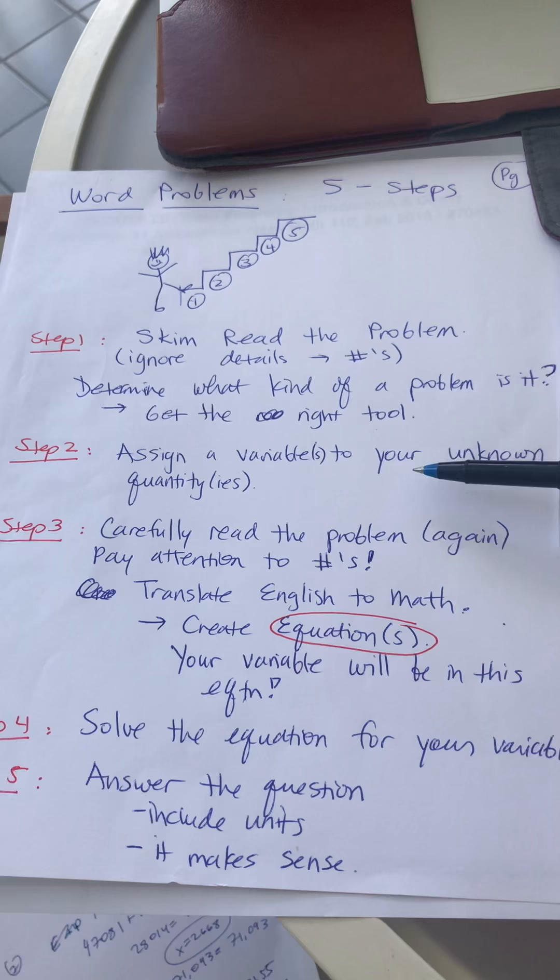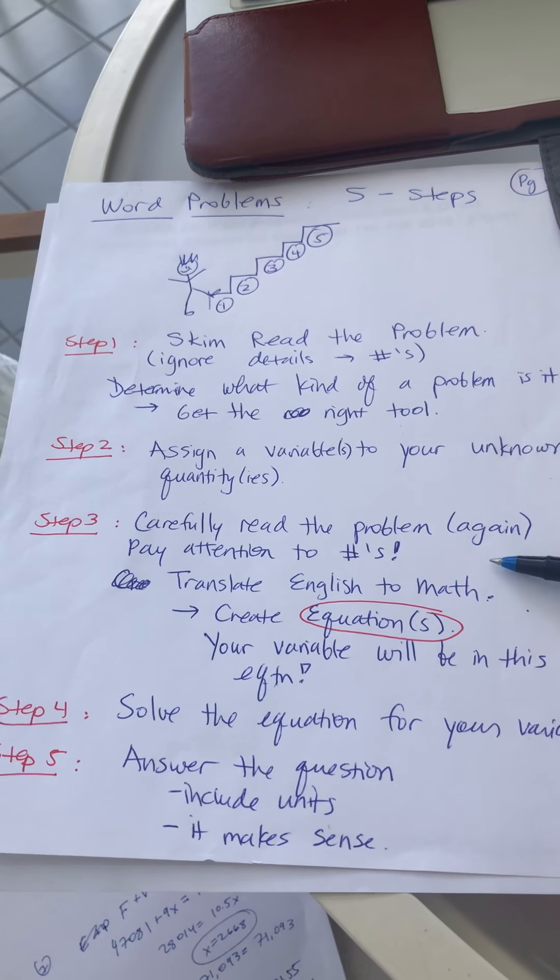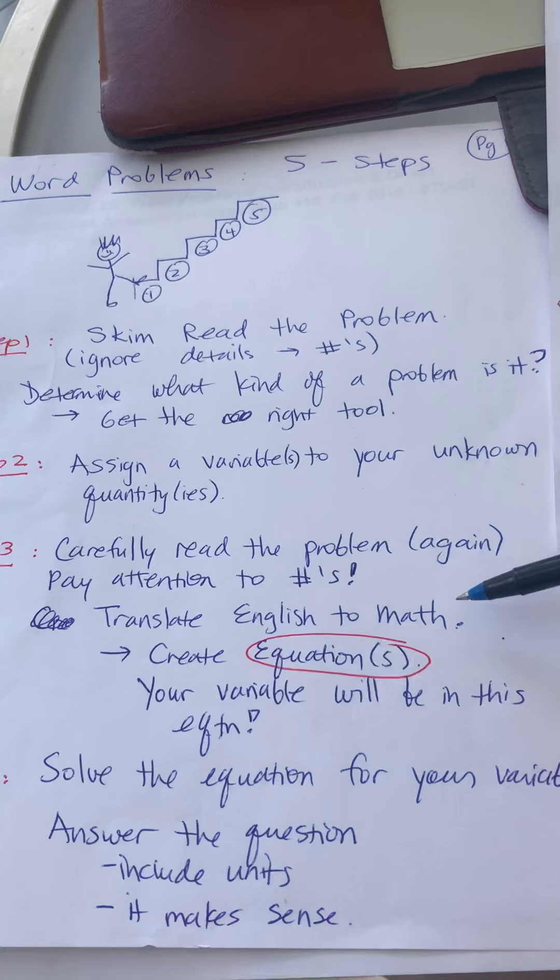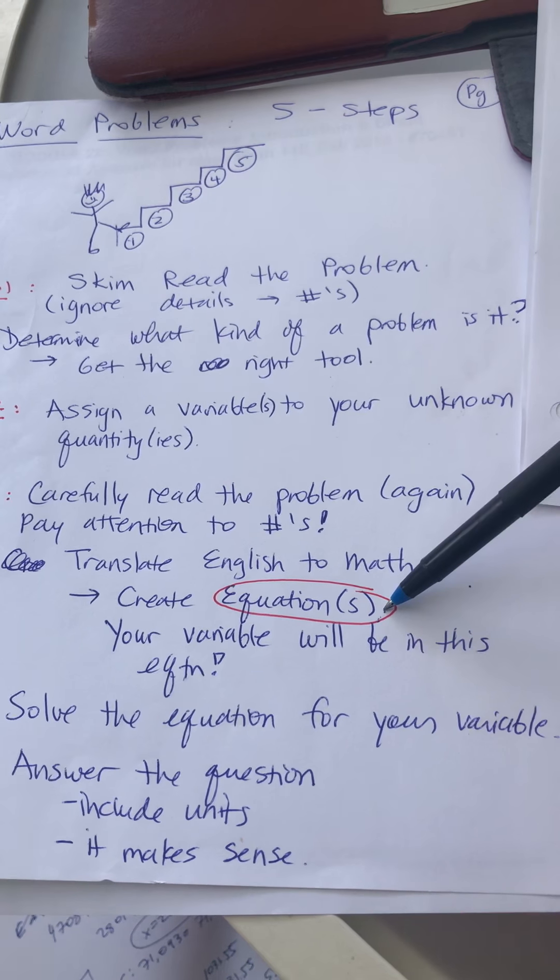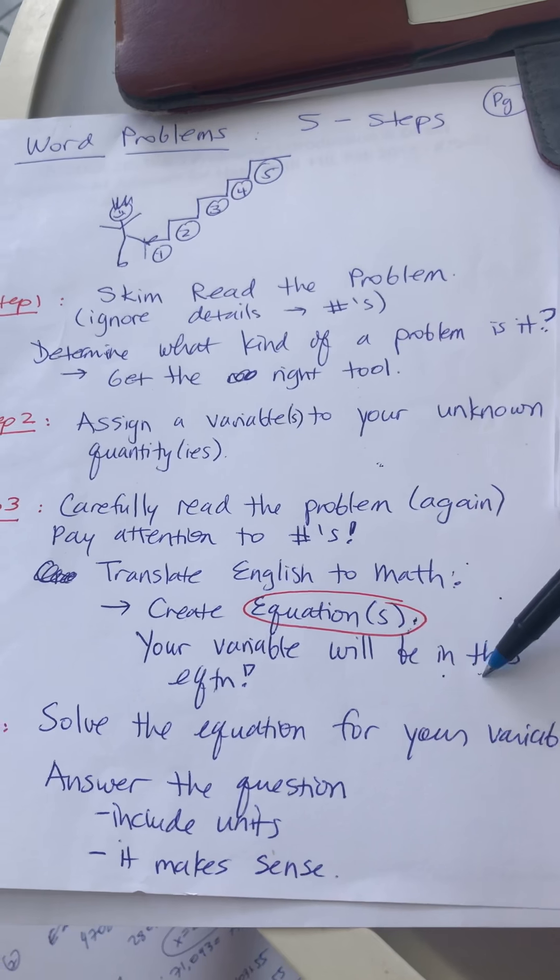Second step: assign a variable to your unknown quantity. Step three is to now read the problem again, and this time you do want to pay attention to the numbers. You're going to translate English to math, and when you translate English to math you're going to be creating equations. Remember to use the variable from step two in your equation.